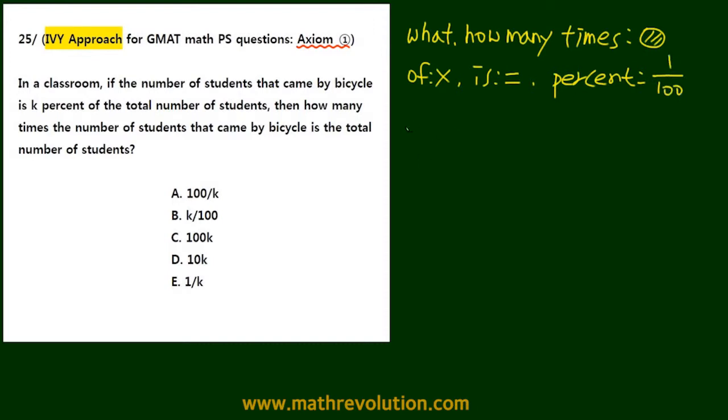Now first we're going to start with the total number of students. Now in this question, you see percentages. It says k percent and something percent. So now we're going to use the multiple of 100 and attach the word s. So 100s, because this is a percentage problem, and the word s comes from the related vocabulary, so we take the initial and attach it.